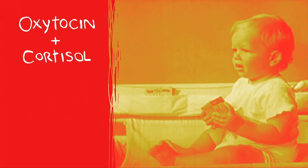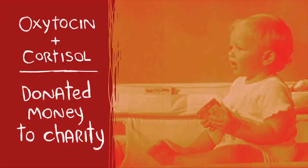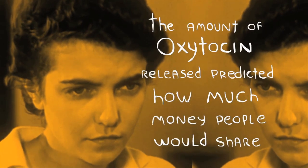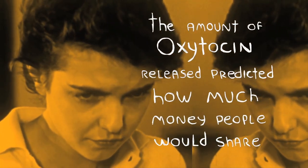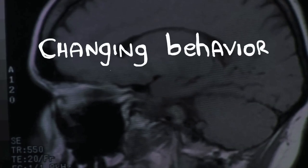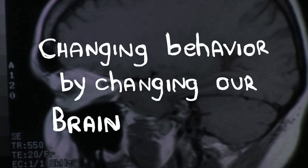In another experiment, we gave individuals a chance to donate money to a charity that works with children who are ill. And indeed, those who released oxytocin and cortisol donated money to this charity. In fact, the amount of oxytocin released predicted in both cases how much money people would share with a stranger or with charity. What we're seeing is that this narrative is changing behavior by changing our brain chemistry.